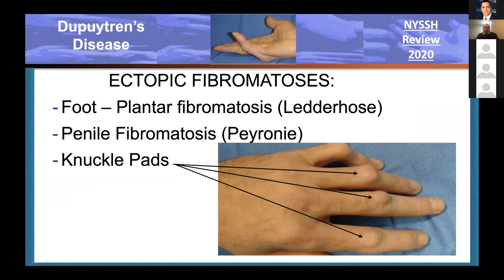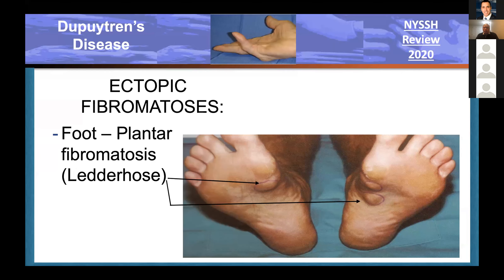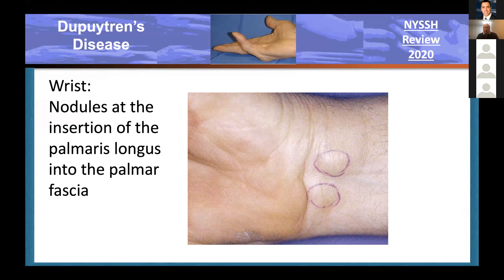Ectopic fibromatoses exist in other locations. The classic ones are the foot, where we have plantar fibromatosis; penile fibromatosis or Peyronie's disease; or knuckle pads. The plantar fibromatoses occur in the arch and can become painful as they get large and push on the structures of the foot while walking. It's a difficult problem to fix surgically because cutting the honeycomb fibrous fatty cushion can sometimes make pain worse. An interesting occasional presentation of Dupuytren's is little nodules at the distal end of the palmaris longus.